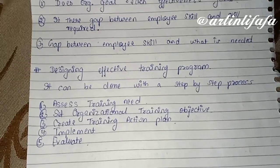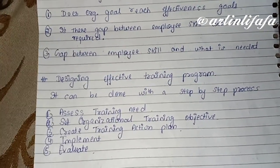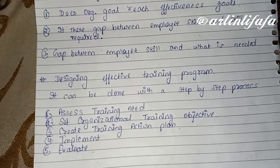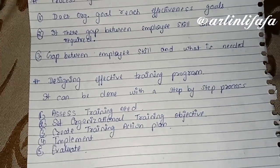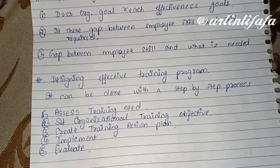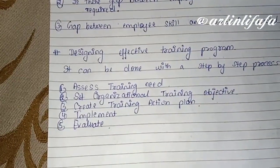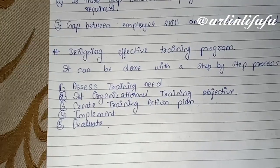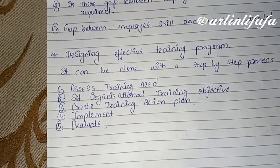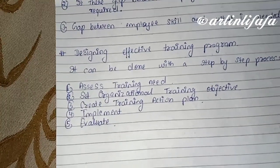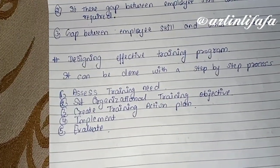Designing effective training program क्या कहता है: जो हम training दे रहे हैं organization के अंदर, उसको हम effectively कैसे दें। It can be done with a step-to-step process। इसमें हमें पहले training का process समझना होता है — कैसे अपने training program को design करेंगे। सबसे पहले access training need: training की need क्या है, यह identify करेंगे।